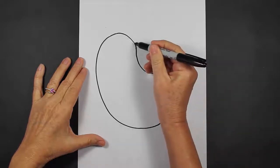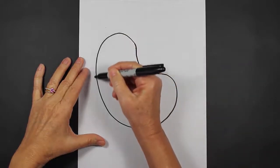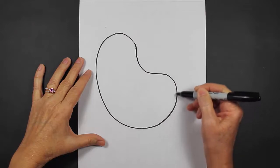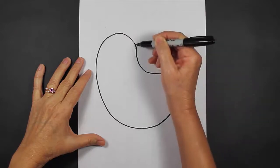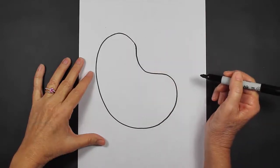All right, so we start out with a curve, we come around, we curve around again, and we come in a little bit like this. That's called a kidney bean shape.